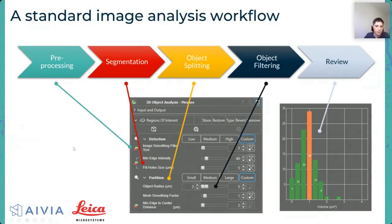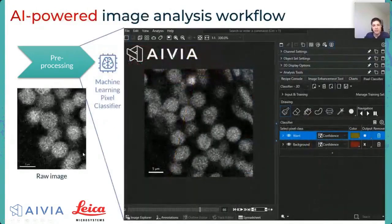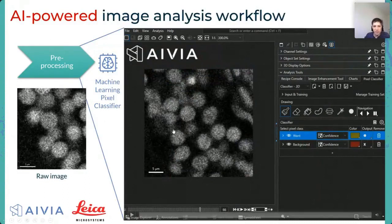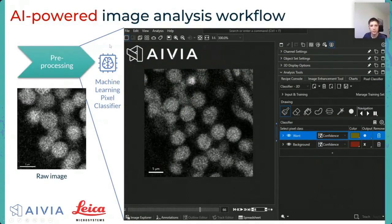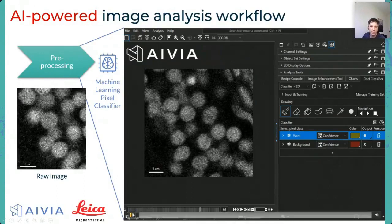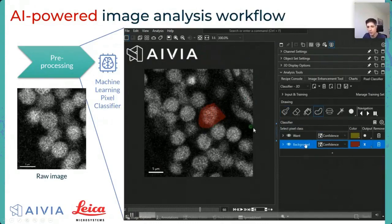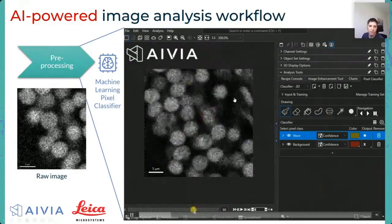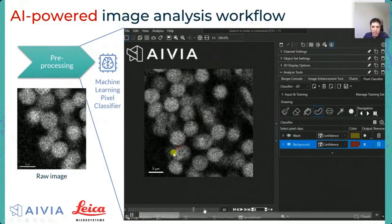There's something else — AIVIA starts with AI, and I want to quickly show an example I recorded yesterday using the same image. This time, the pre-processing and segmentation are done with a machine learning pixel classifier — a GPU-accelerated technology. I select one class corresponding to what I do not want, which by default is called the background, then paint over it to identify the object of interest in that area.